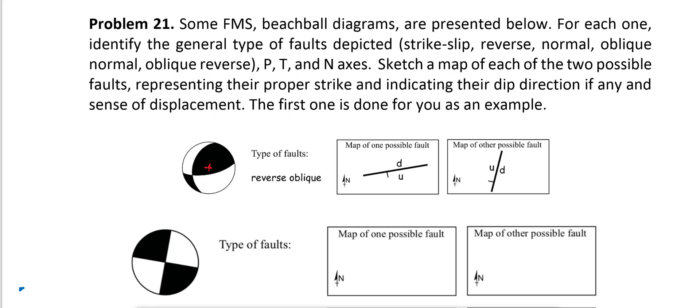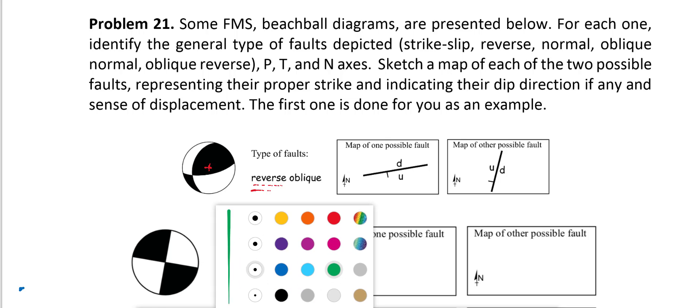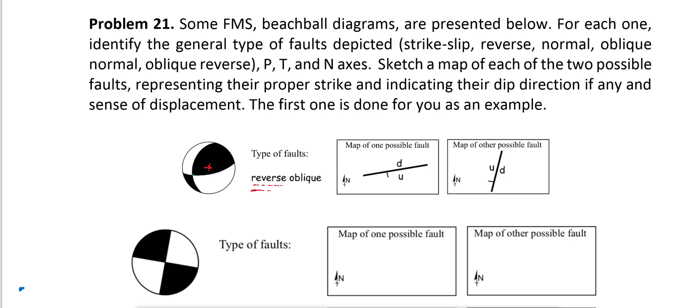The center of the stereo net is plotted in the colored zone, which is black here. If this is the case, then you are dealing with the reverse fault. If the intersection of the two planes is sitting somewhere between the center and the primitive circle, then you are dealing with an oblique fault. So this is a reverse oblique fault.